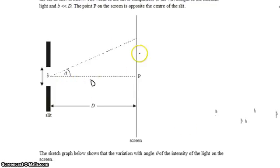That is d here, and this is that half-width that they were talking about of the central maximum.